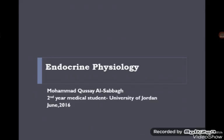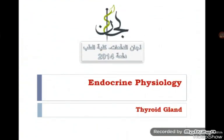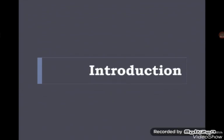Welcome to this lecture on endocrine physiology. The previous lecture, my colleague Hashim talked about the pituitary gland and its hormones. In this lecture, I'm going to talk about the thyroid gland and its metabolic hormones. The thyroid gland is one of the most important glands in our body because it controls all of our metabolic activities as well as the development of many organ systems like the central nervous system and the musculoskeletal system. Let's start with a brief introduction about this gland and a revision of its embryology, anatomy, and histology.